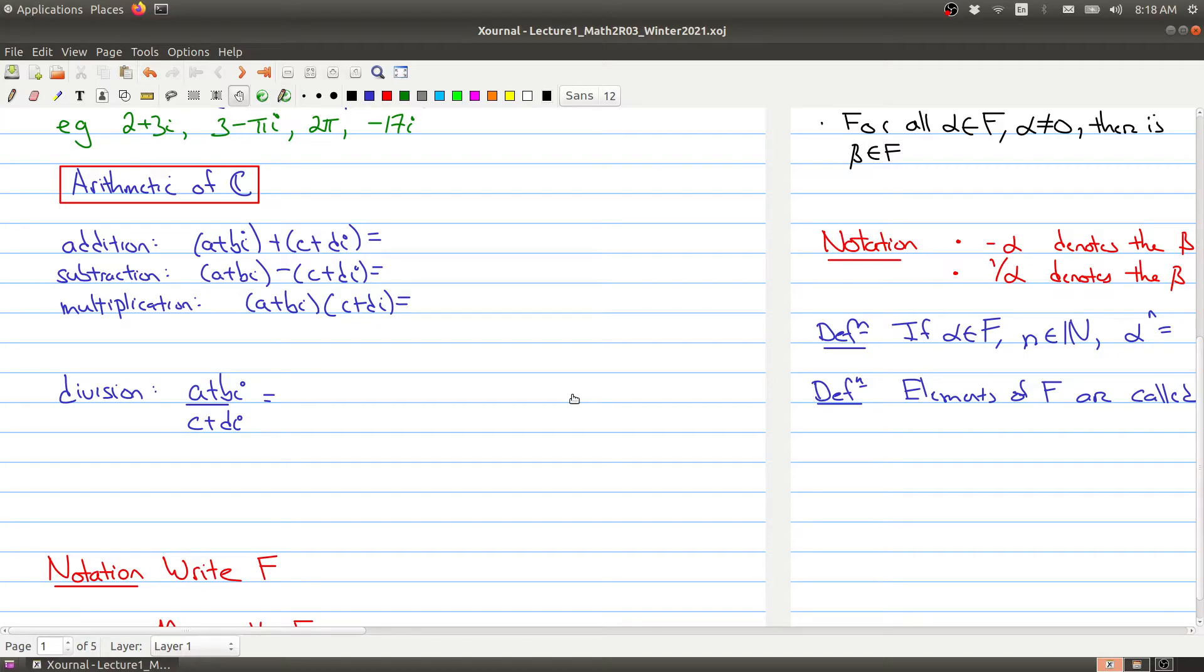And again this is probably review. You can take two complex numbers a plus bi plus c plus di, and the sum of those two numbers is a plus c, that becomes the real part, and the imaginary part is b plus di. The subtraction works in the same way: we group together the real part and then we subtract the imaginary part.